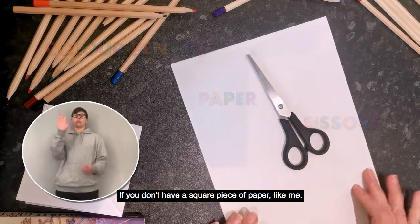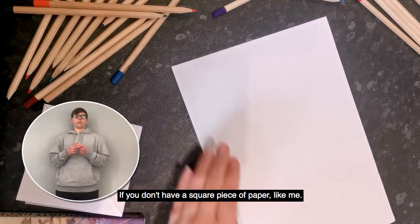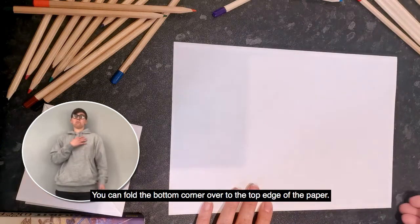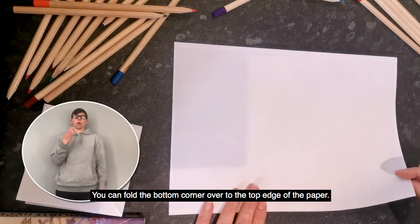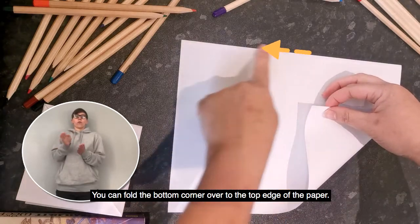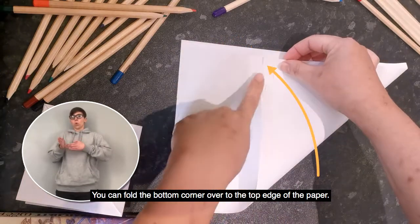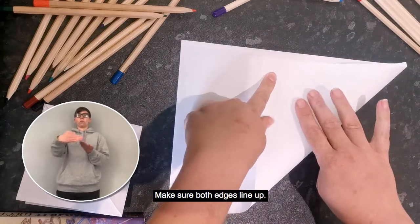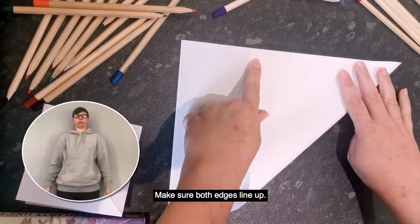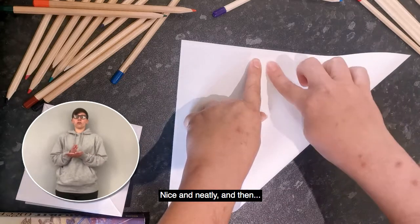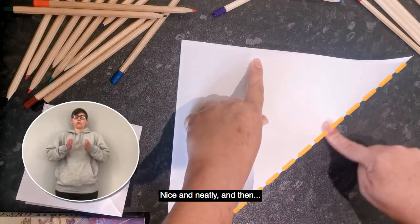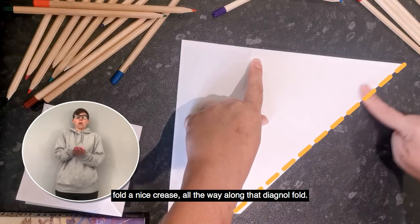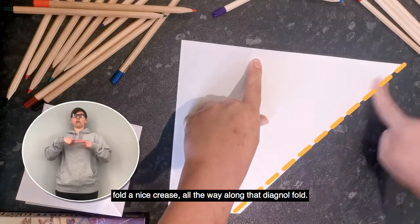If you don't have a square piece of paper, like me, then I'm using an A4 piece of paper. You can fold the bottom corner over to the top edge of the paper. Make sure both edges line up nice and neatly, and then fold a nice crease all the way along that diagonal fold.